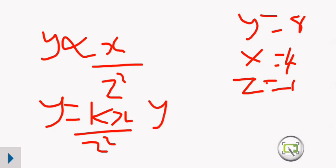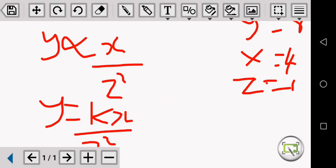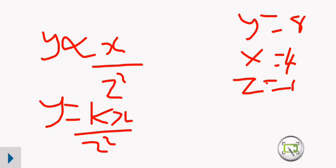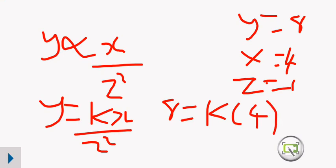We are looking for K. What is Y? Y is 8. And K, we don't know. What is X? X is 4. And what is Z? Z is 1 squared. 1 squared is the same as 1.